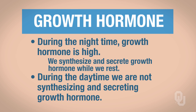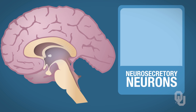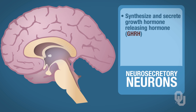Let's look at how growth hormone is synthesized and secreted. We're going to begin with the hypothalamus, which is located at about the center of your brain. We're going to focus on some neurons located in the hypothalamus called neurosecretory neurons. These neurosecretory neurons will be synthesizing and secreting growth hormone releasing hormone, or GHRH. It's important to learn both the abbreviation and the full hormone name.